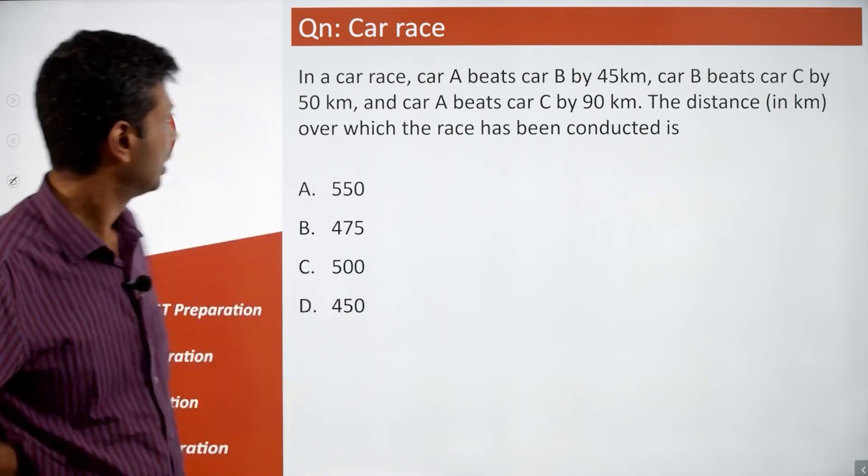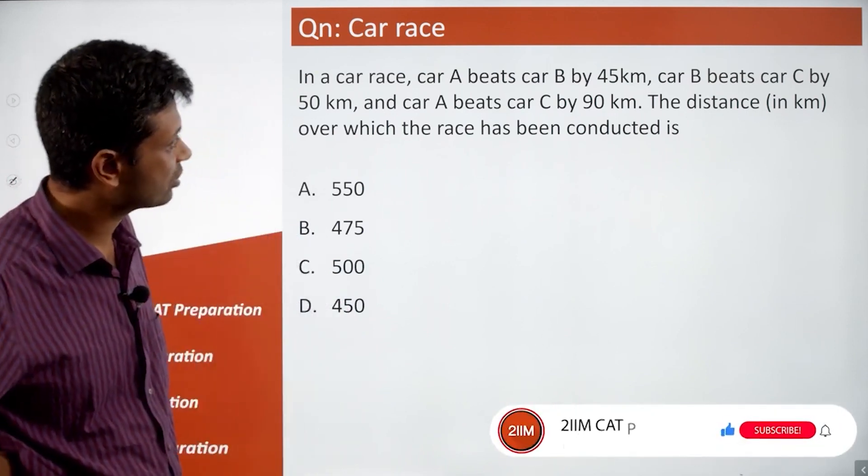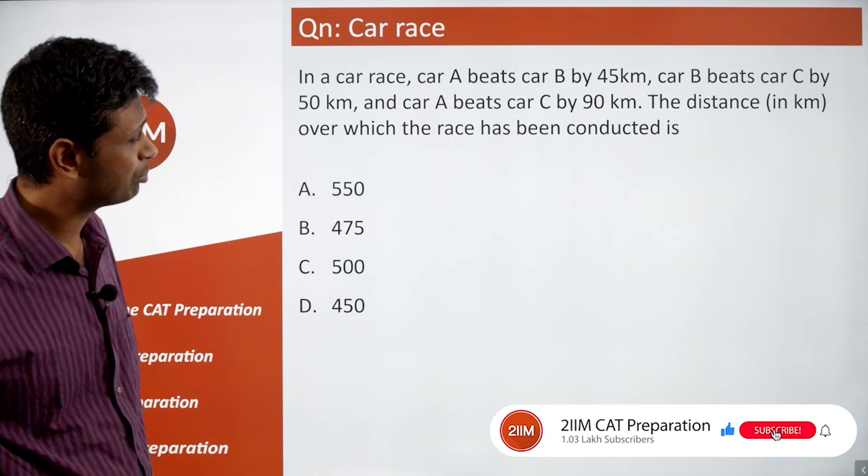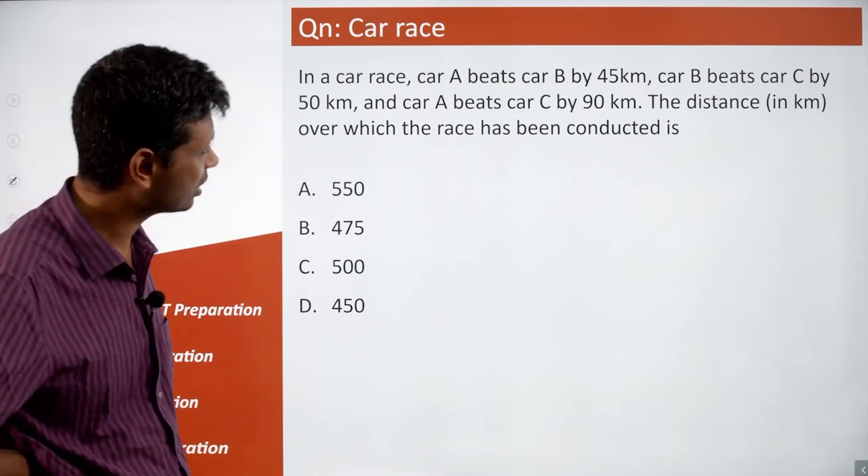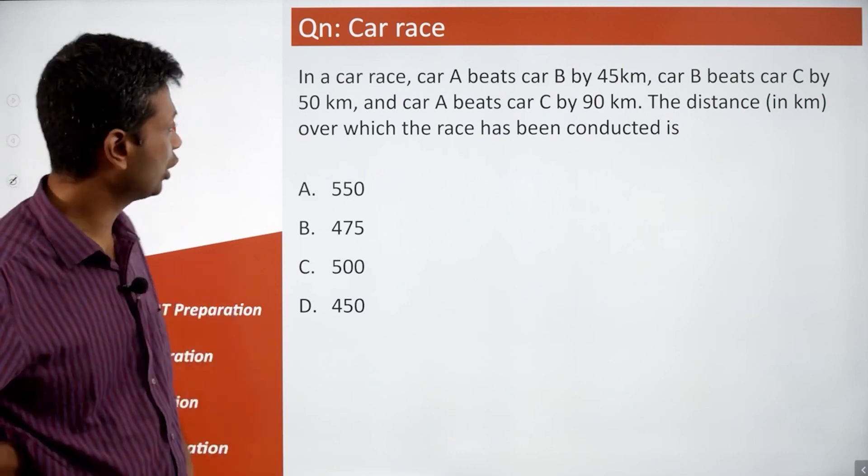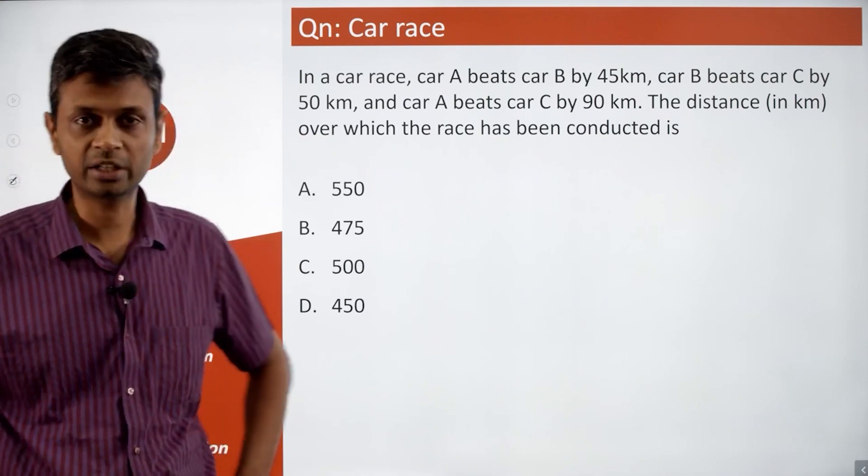Let's do this one, interesting question. In a car race, car A beats car B by 45 kilometers, car B beats car C by 50 kilometers, and car A beats car C by 90 kilometers. The distance in kilometers over which the race has been conducted is...